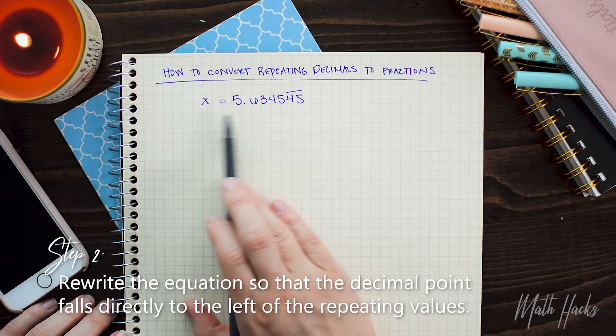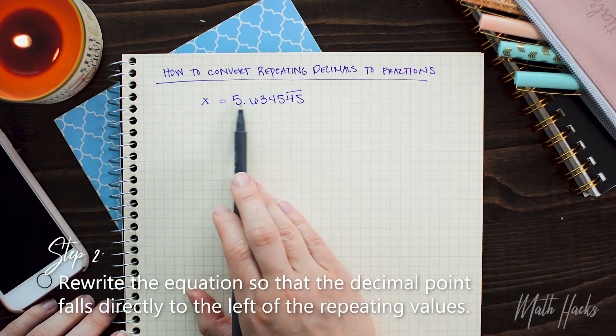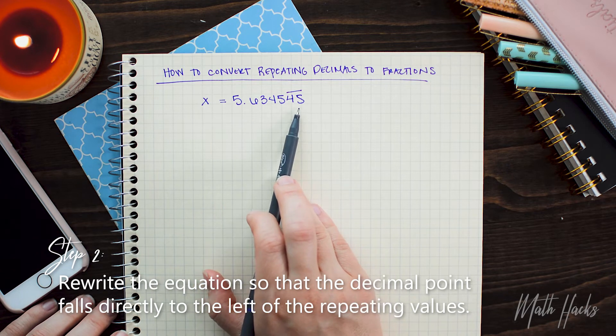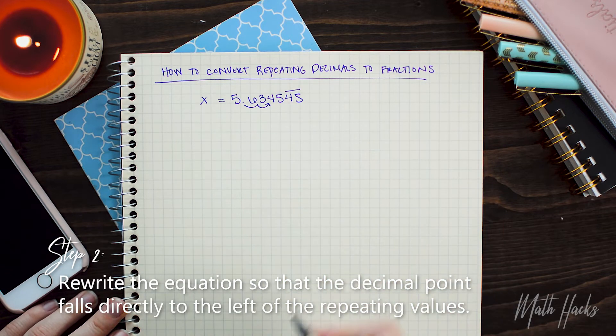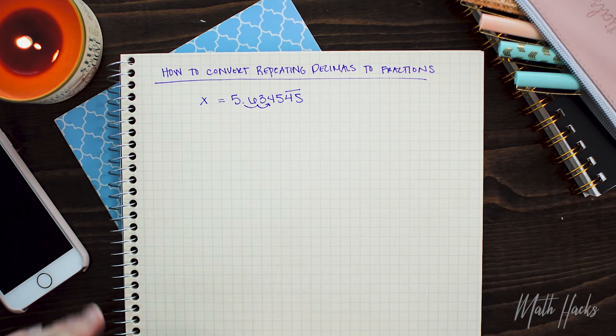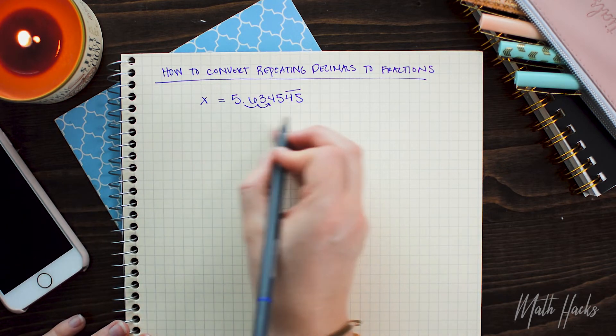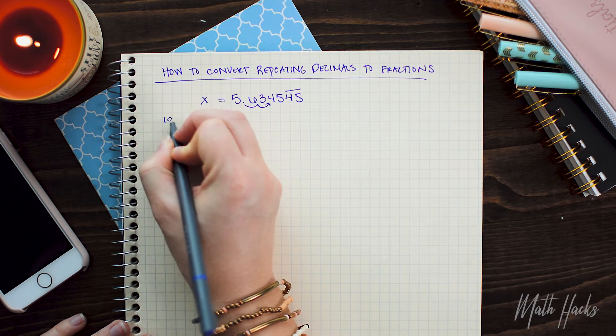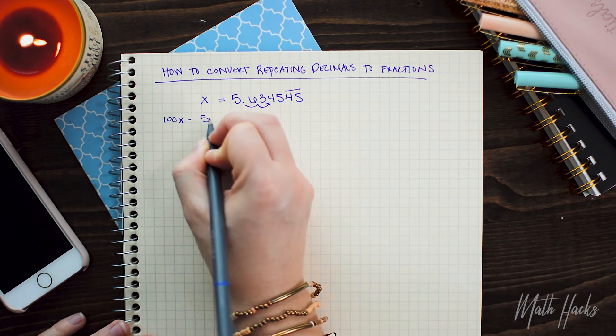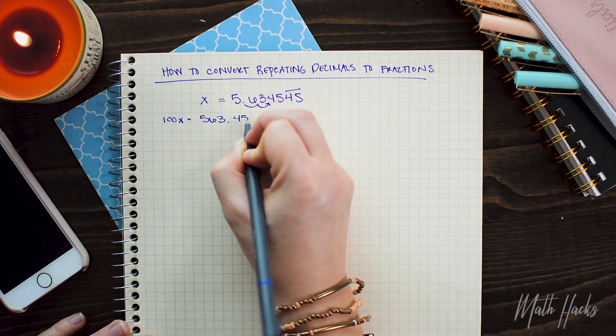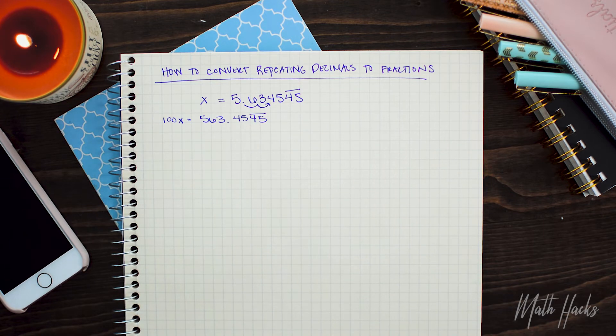...what can I multiply 5.634545 by to get 563.4545? Now the easiest way to look at that is just to say, well, I need to move it two decimal places over, so I'm going to multiply by 100. Because we have this equation, now I'm going to multiply both sides by 100. So that's going to give me 100x equals 563.45 repeating. Okay, that's equation number one.